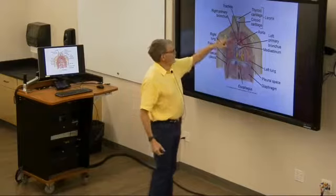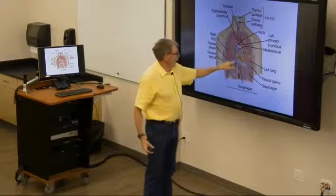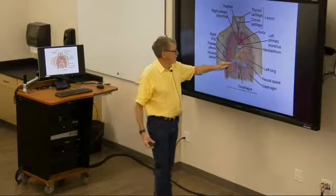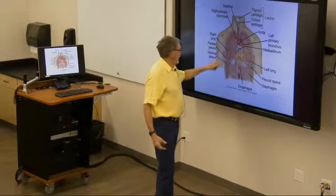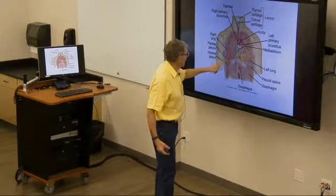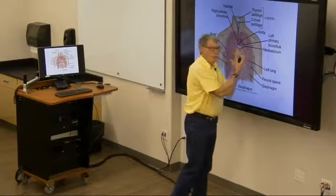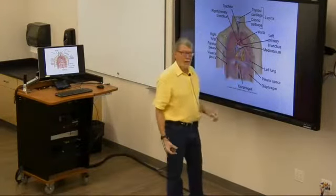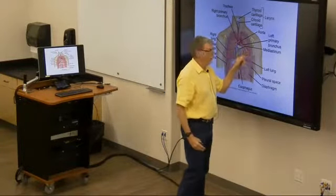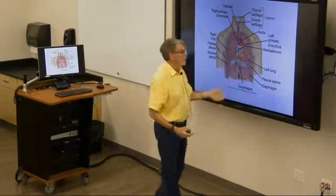Here we have the lungs in the thorax and the mediastinum. Here's the diaphragm that separates the thorax from the abdominal cavity. The top of the diaphragm and the sides of the lungs form the pleural space, which goes all the way around the lungs. It has to be kept intact — it's vacuum-sealed. It holds your lungs open. If there's ever a breach of that vacuum seal, the lungs collapse and you have a pneumothorax.